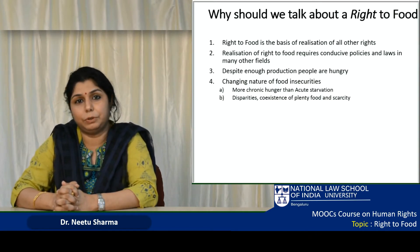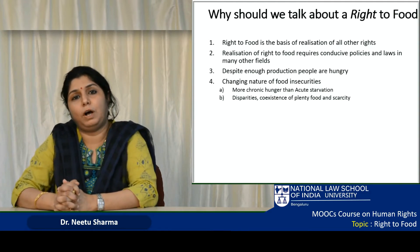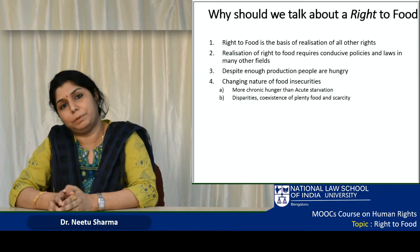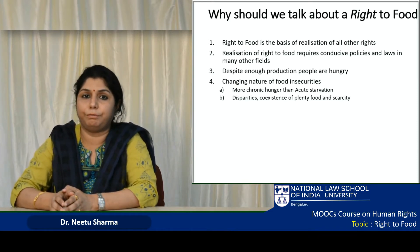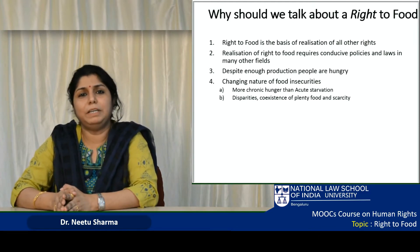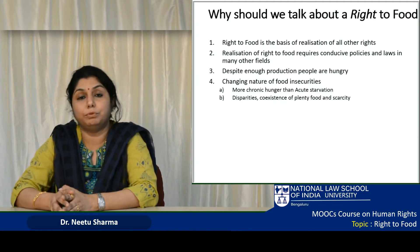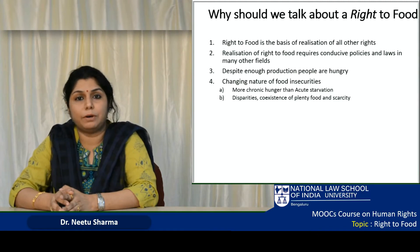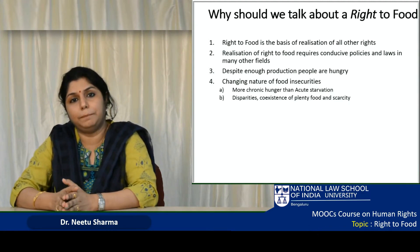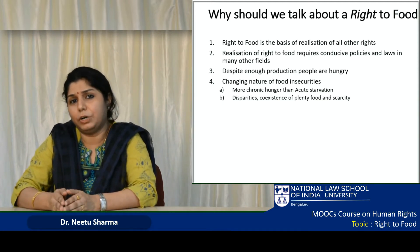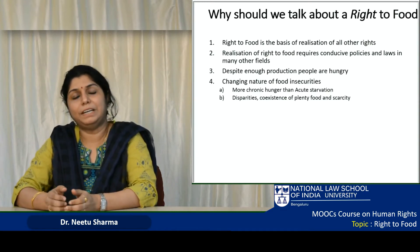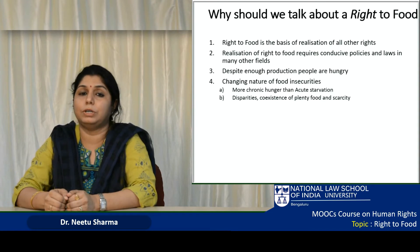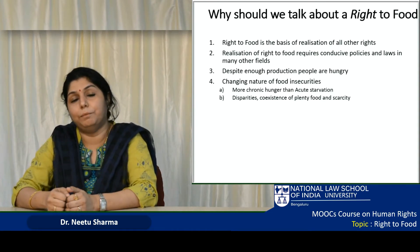The nature of how we consume food and how food is produced and made available — the status of food security — has changed over a period of time. If you know about famines of the early 20th century, many people died because of starvation. But now the nature of food insecurity has changed. Instead of acute starvation — meaning non-availability of food for a long time — we see more of chronic hunger. Food may be available but not enough in quantity, or the quality and nutritive value does not match standards. We have more of chronic hunger.